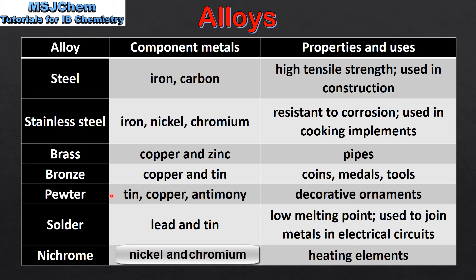Pewter is composed of tin, copper and antimony and is used in decorative ornaments. Solder is made of lead and tin and is used to join metals in electrical circuits. Nichrome is composed of nickel and chromium and is used in heating elements.